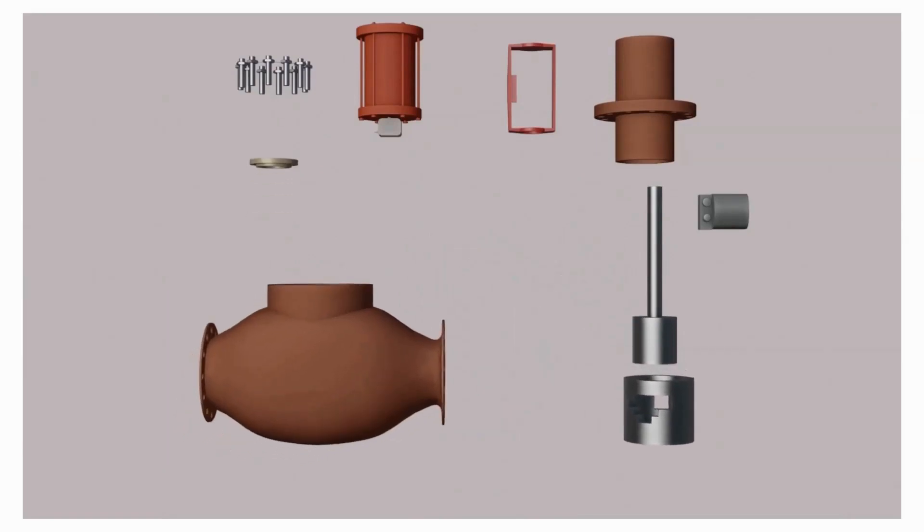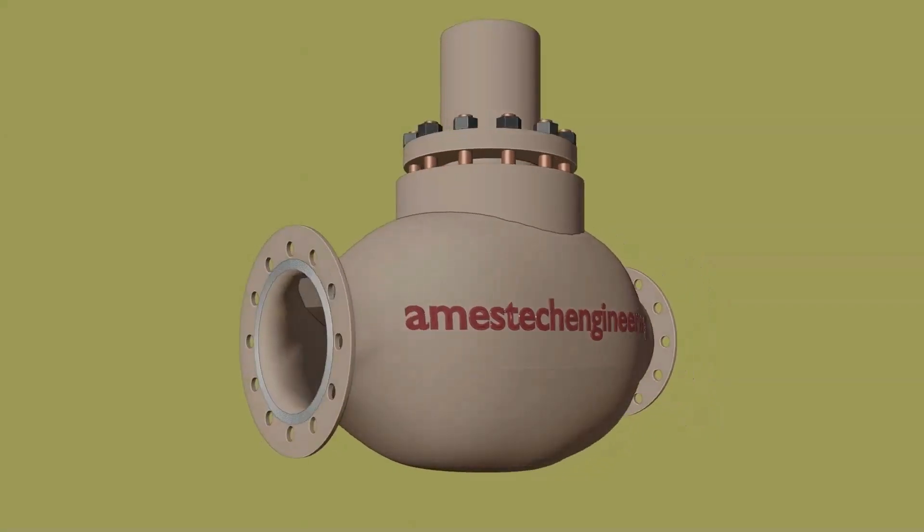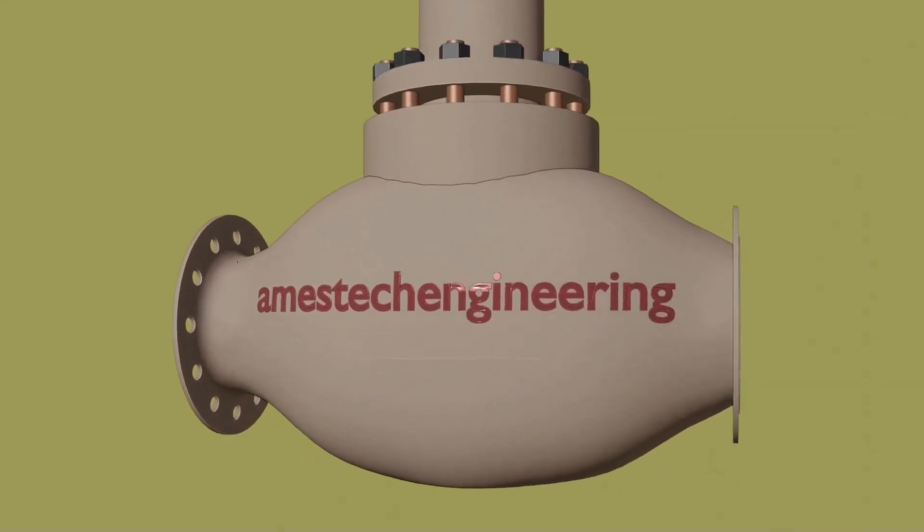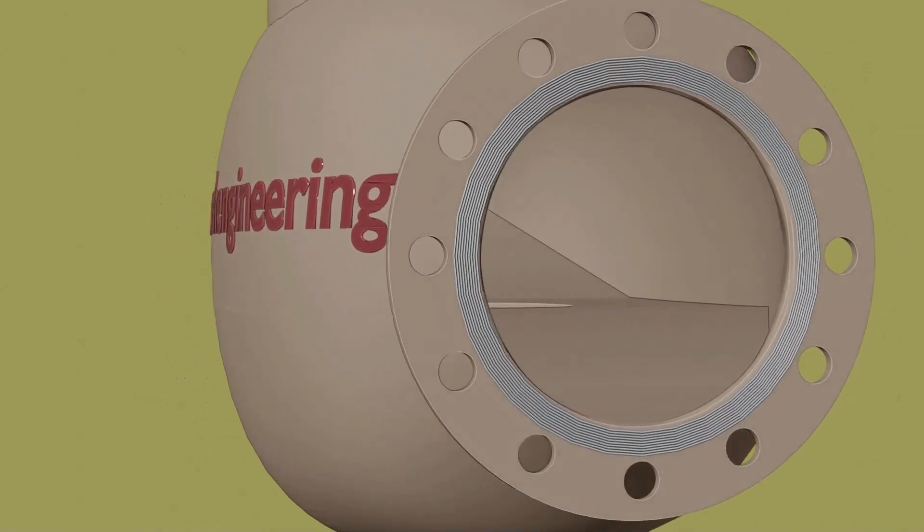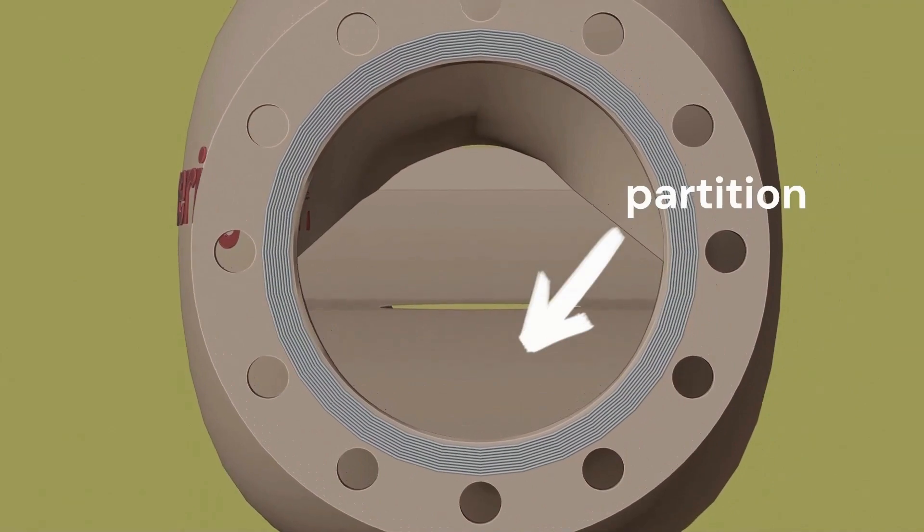We check the hydrostatic pressure test on the body and bonnet. This is the globe valve body and bonnet. In that globe, the body is different from another valve. If we want to see one side to the other side through the valve, we cannot do that because there is some partition between the flange.